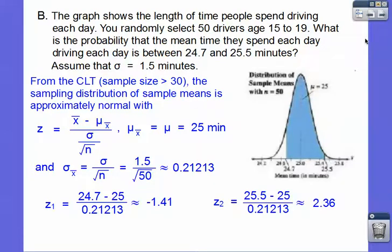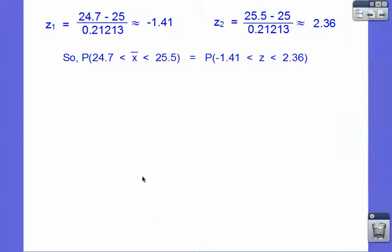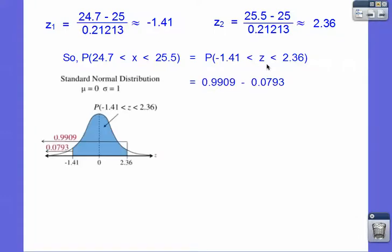Let's calculate each z-score. So 24.7 minus that 25 over that decimal, and then this minus the 25 over the decimal. So our z-scores are going to be from -1.41 to 2.36. So the probability of our sample means to be between 24.7 and 25.5 will be the same probability with z being between -1.41 and 2.36.